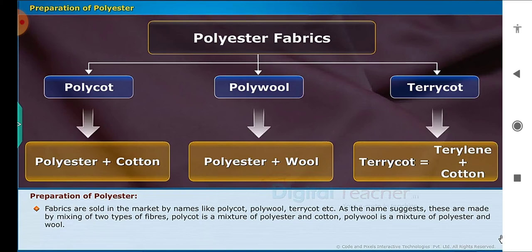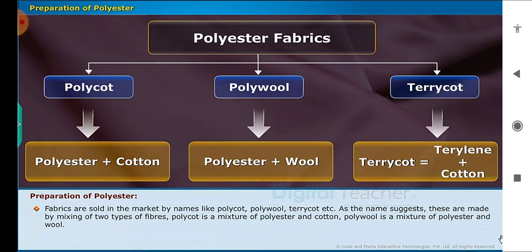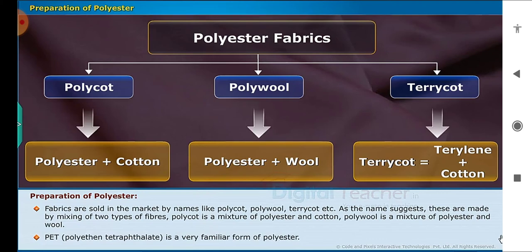Fabrics are sold in the market by names like polycot, polywool, terricot, etc. As the name suggests, these are made by mixing two types of fibers. Polycot is a mixture of polyester and cotton. Polywool is a mixture of polyester and wool. Polyethylene terephthalate (PET) is a very familiar form of polyester.